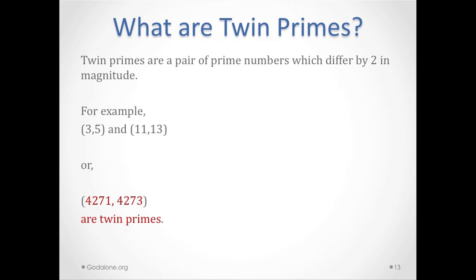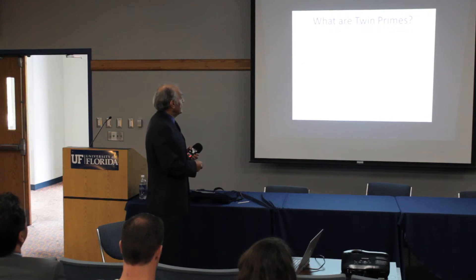So what are twin primes? Twin primes are a pair of prime numbers that differ by 2 in magnitude. For example, 3 and 5, and 11 and 13 are twin primes. 4271 and 4273 are also twin primes. Do you see that they only differ by 2?